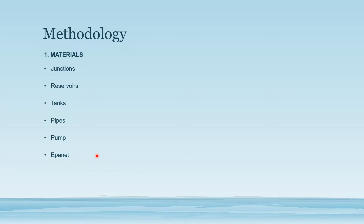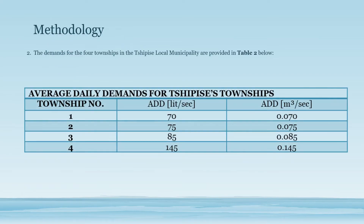Then we have EPANET. EPANET is the design software that is required for the hydraulic analysis of the network. Before using EPANET software, there is preliminary data that is required for the network. The study area and the demands required at the nodes need to be determined. On this project assignment, we have been provided with the study area, as seen on figures one and two, and the demand required at the different nodes.